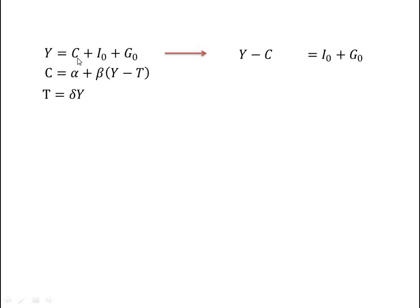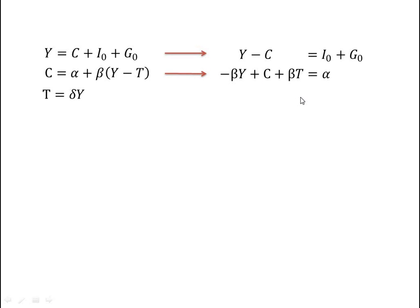Here, c is written on the left-hand side of the equation. In the second equation, after multiplying beta into (y minus t), we get beta y minus beta t. Writing all terms on the left-hand side, the second equation becomes: minus beta y plus c plus beta t equals alpha. The third equation is written as minus delta y plus t equals 0.